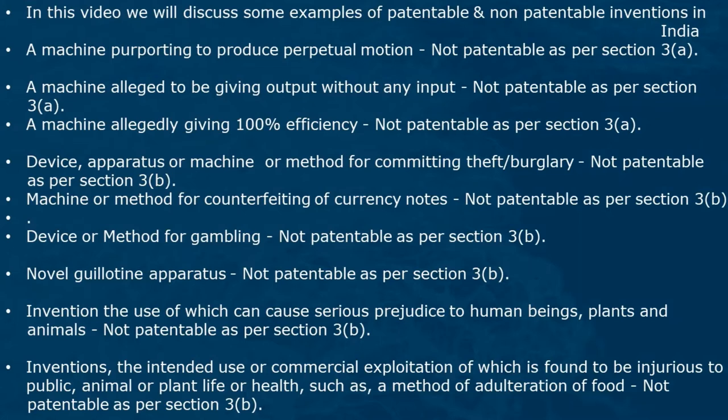A novel guillotine apparatus is not patentable as per section 3b. An invention the use of which can cause serious prejudice to human beings, plants and animals is not patentable as per section 3b. Inventions the intended use or commercial exploitation of which is found to be injurious to public, animal or plant life or health — such as a method of adulteration of food — are not patentable as per section 3b.